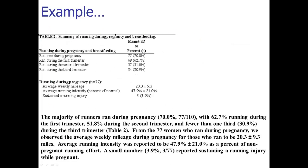Here's another example from a paper I was editing for a student — a study looking at how much competitive runners run during pregnancy. A poor results paragraph read: 'The majority of runners ran during pregnancy: 70% (77 out of 110), with 62.7% running during the first trimester, 51.8% during the second trimester, and fewer than one third during the third trimester. The average weekly mileage during pregnancy for those who ran was 20.3 ± 9.3 miles.' The author is just reading the table.